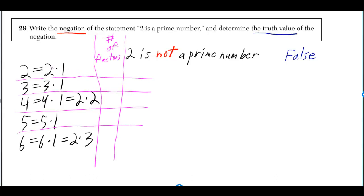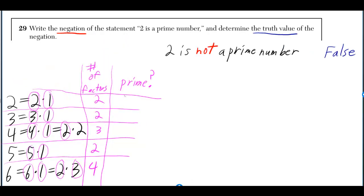A prime number has exactly two factors. Two has two factors, three has two factors, four has three factors, five has two, six has four. So it's prime when it has exactly two factors. So two is prime, three is prime, and five is prime. Four is not and six is not.